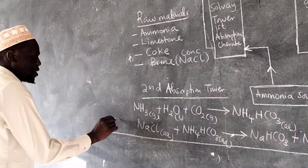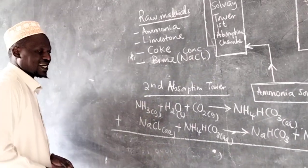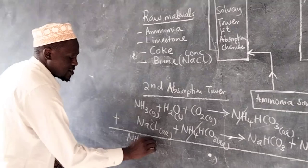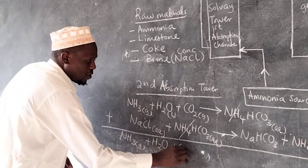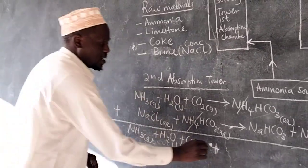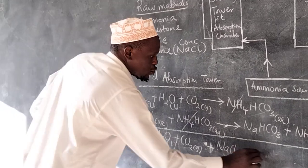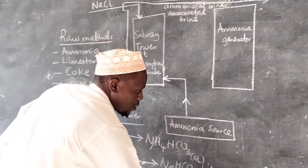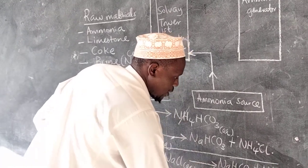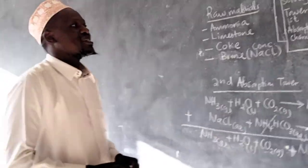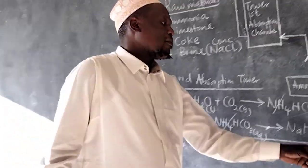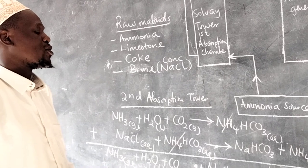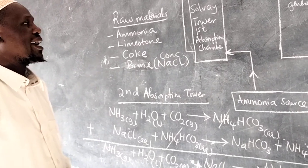The overall equation, combining the two steps, gives: ammonia gas + water + carbon dioxide gas + sodium chloride → sodium hydrogen carbonate + ammonium chloride. At the second absorption tower (the carbonator), the ammonium chloride forms crystals at the cooler ends of the carbonator.